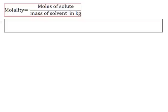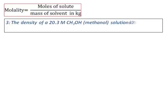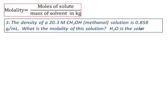Here is one more question on molality. The density of a 20.3 molar methanol solution is 0.858 grams per milliliter — what is the molality of the solution? Water is the solvent. In this case, molarity (capital M) is given and they are asking for molality (small m). This is an important question involving a lot of calculation, so listen carefully. I have to start with molarity and then find molality.